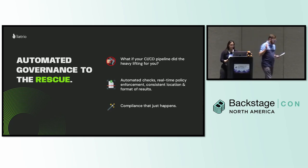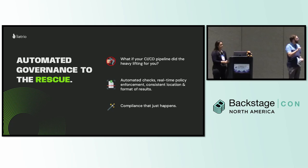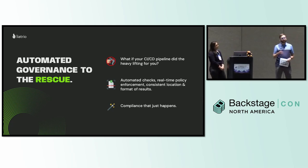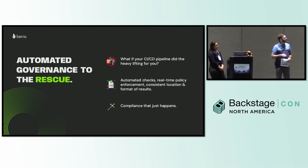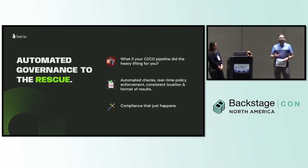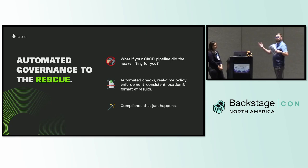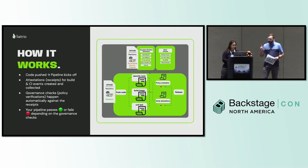So with automation, we're going to go through that pipeline and take a look at what checks we're performing on this example pipeline. We're going to show what policy enforcement can be done against those checks through a centralized policy system, what the format of those results are, and then we're going to show you what the status is. This is how auto governance basically works.